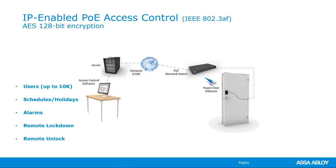So let's dive in and look at what operating a PoE system would actually look like. Just like your Wi-Fi lock, all the smarts are built into the lock itself. You're going to be able to have those 10,000 users, set up those schedules and holidays, and have those alarms. But now the difference is this is a hardwired system. So now you can have every alarm set and it's not going to drain any batteries because it's hard powered. This also gives the ability to do a remote lockdown or remote unlock, in addition to having that privacy button.